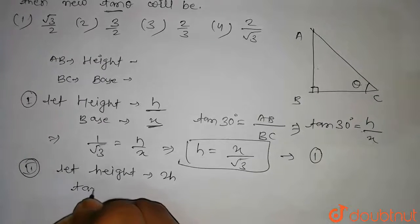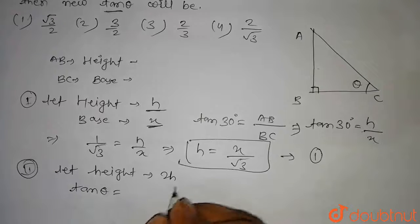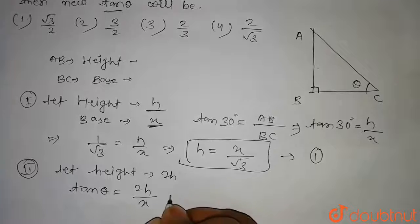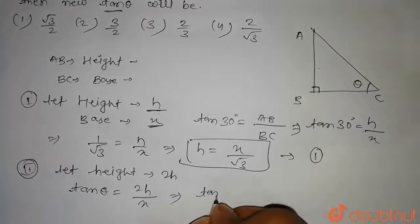So for this height, tan theta will be equal to height upon base, that is 2h divided by x. And we have to find tan theta.